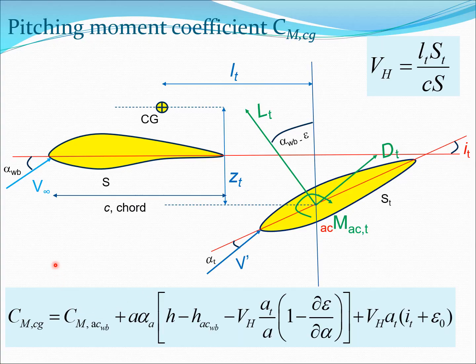Let us start where we left off in our previous lecture — please review it if you have not, because this lecture requires you to know the basic derivation of CMCG, that is the pitching moment coefficient about the center of gravity of the airplane. In our previous lecture we had this figure: the first wing section is the wing-body representation and the second is the tail. The velocity at the wing-body is V-infinity at angle alpha-WB, and the velocity at the tail is V-dash at angle alpha-T, both measured with respect to the zero lift line, shown in red.